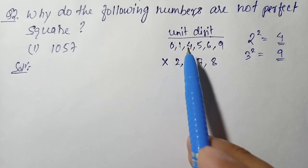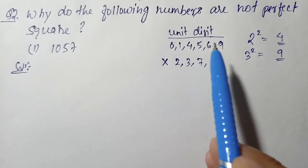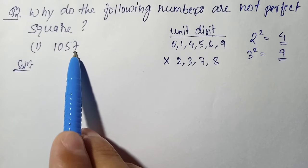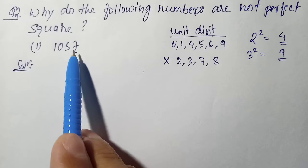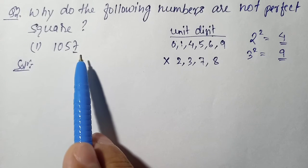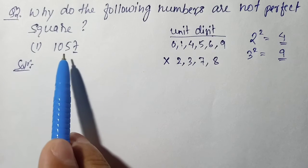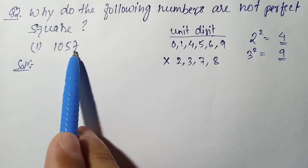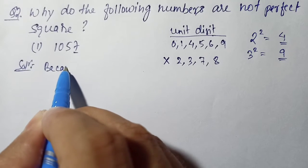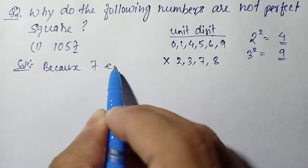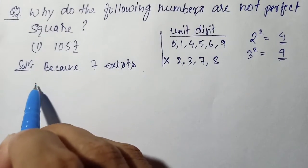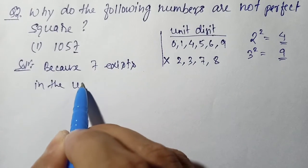Question number 1: the number is 1057. In this number the unit digit is 7. We know that if the unit digit is 7, that number cannot be a perfect square. So the reason is: because 7 exists in the unit place.